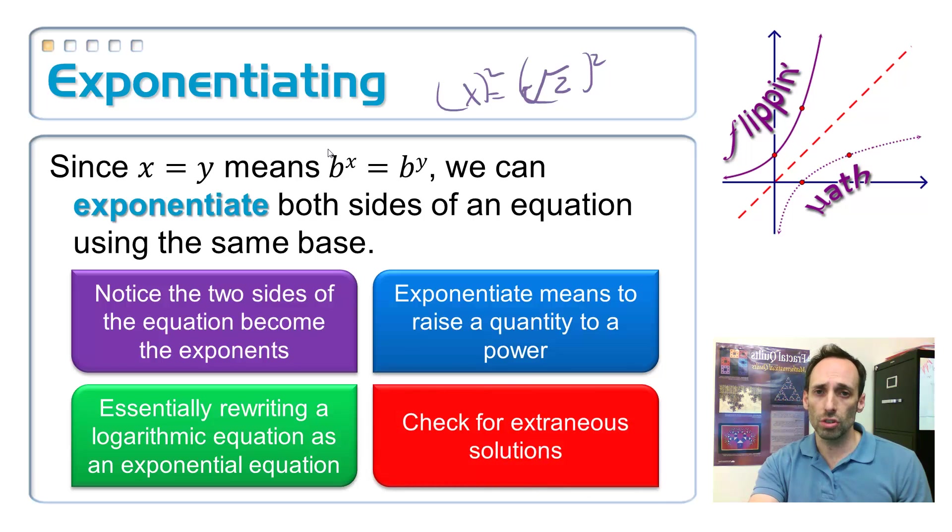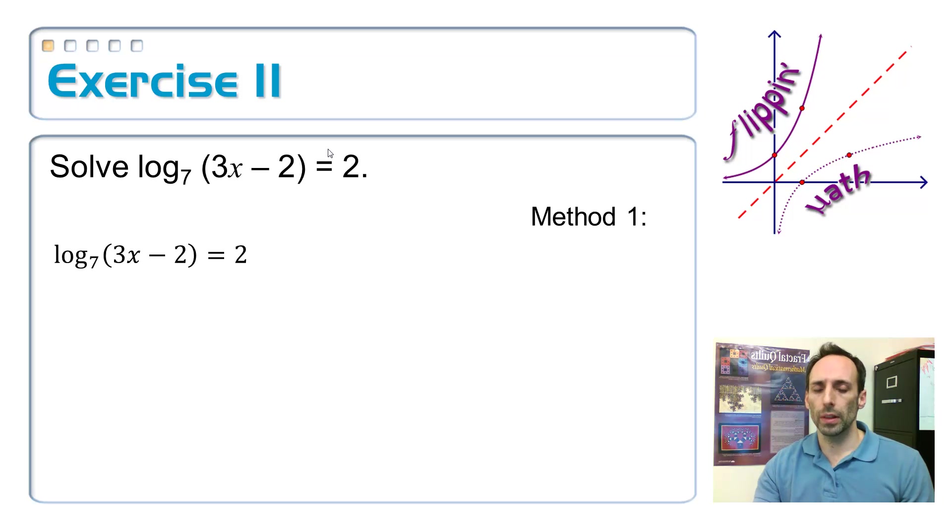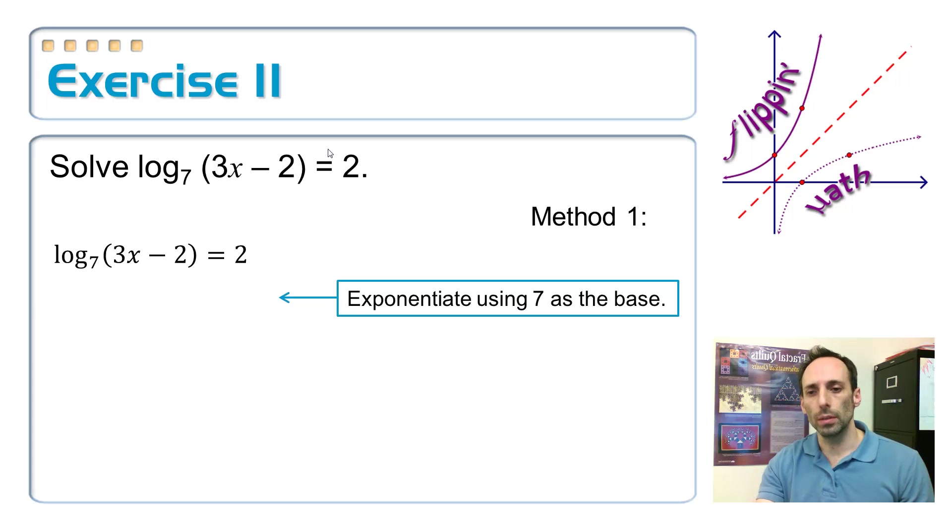So, essentially, you're rewriting a logarithmic equation as an exponential equation. That's what you will see. And the key thing here is to check for extraneous solutions because there's a domain issue. Whatever we're taking the log of must end up being positive. So, let's look at this. A couple of different methods. The first one is, I have that logarithmic equation, and I'm going to exponentiate.